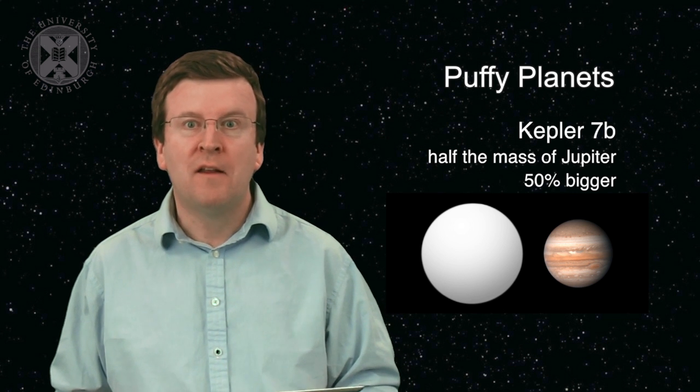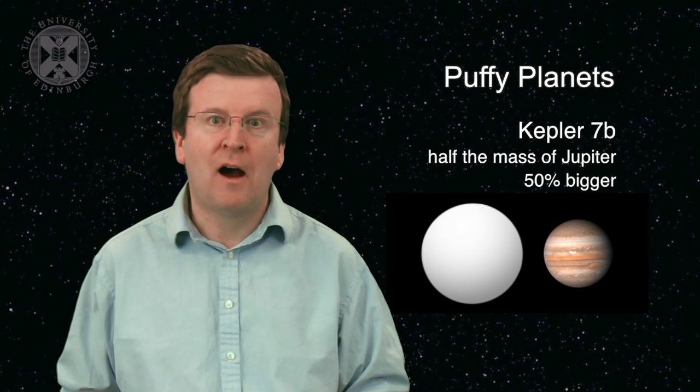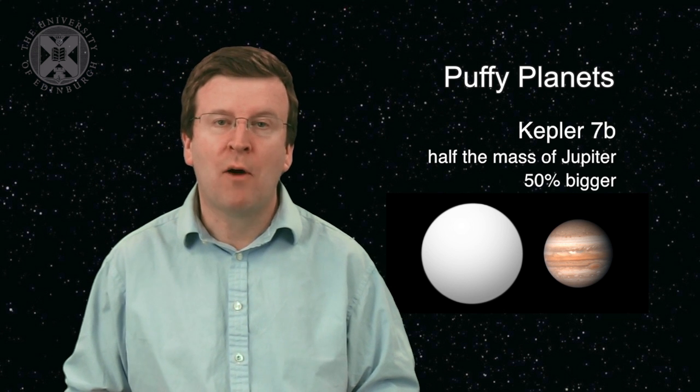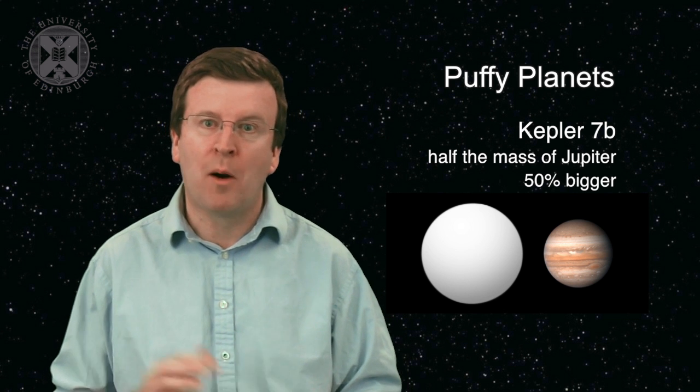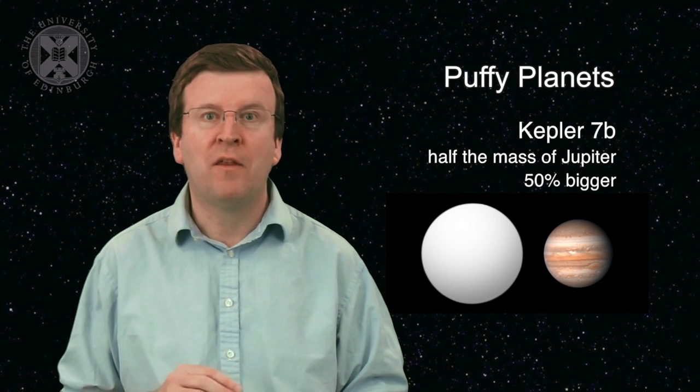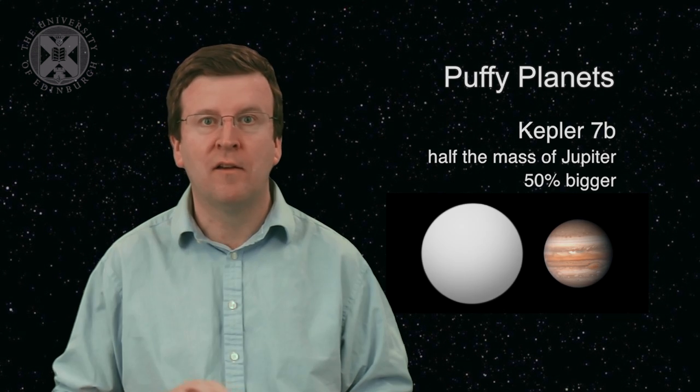It orbits the star near the end of its life in the constellation Lyra, and it has a density the same as polystyrene. No one really knows what its composition is. It probably has hydrogen and helium, and maybe some other components. But these are Jupiter-like planets with very low densities.